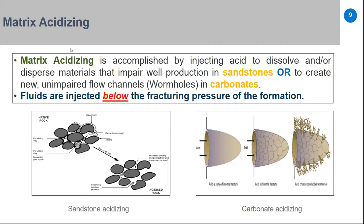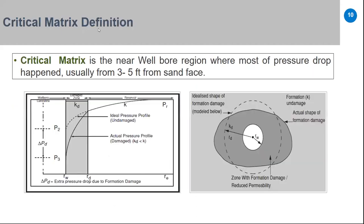Because we deal with matrix acidizing, we deal with the critical matrix — the near-wellbore area region, typically three to five feet from the sand face. Most of the pressure drop in the reservoir occurs in this area. Looking at the pressure profile along the reservoir radius: from the drainage radius RE with reservoir pressure, pressure declines as you move toward the wellbore RW, with the steepest drop occurring within three to five feet of the sand face.